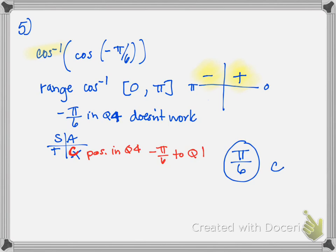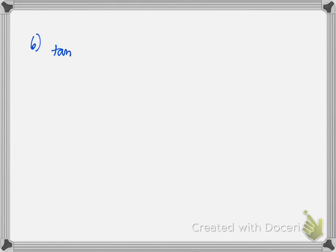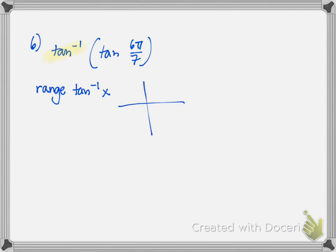That one's a little tricky, but you have to know where you are and where you're supposed to go. Number 6 says we have inverse tangent of tangent of 6π/7. First things first, because my outside function is inverse tangent, I've got to know where my answers are supposed to be. The range of inverse tangent is quadrant 4 and quadrant 1, because the range is negative π/2 to π/2.